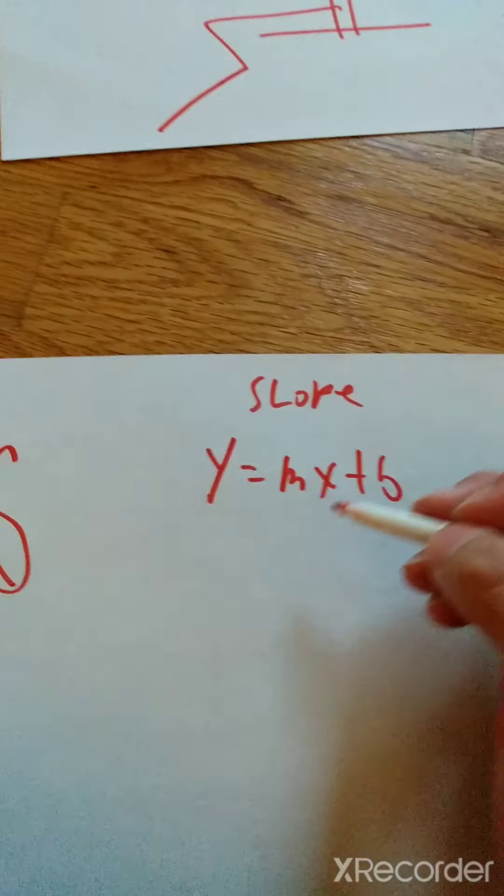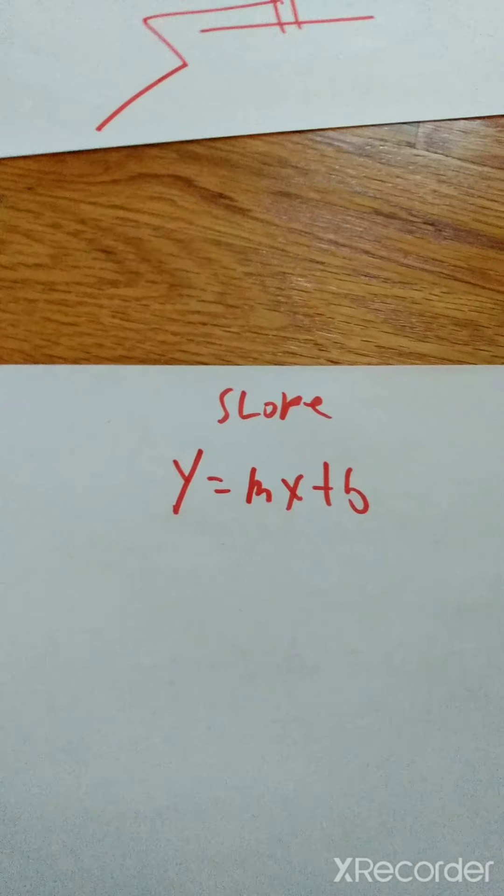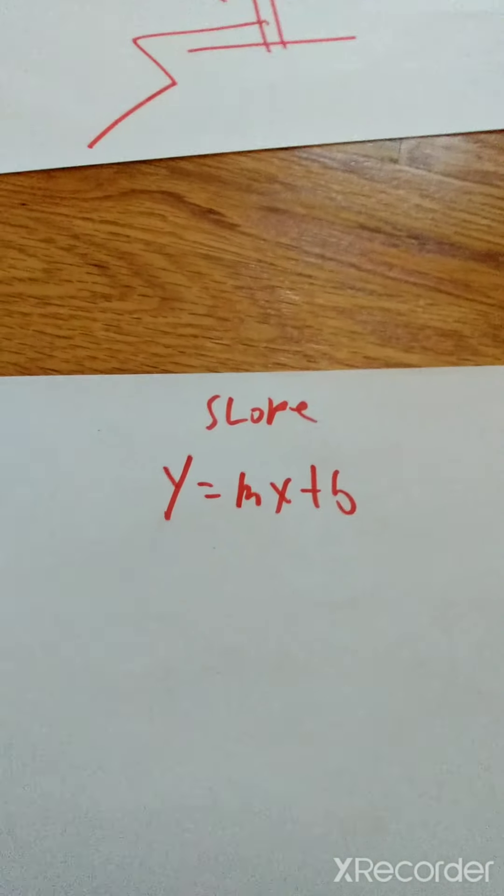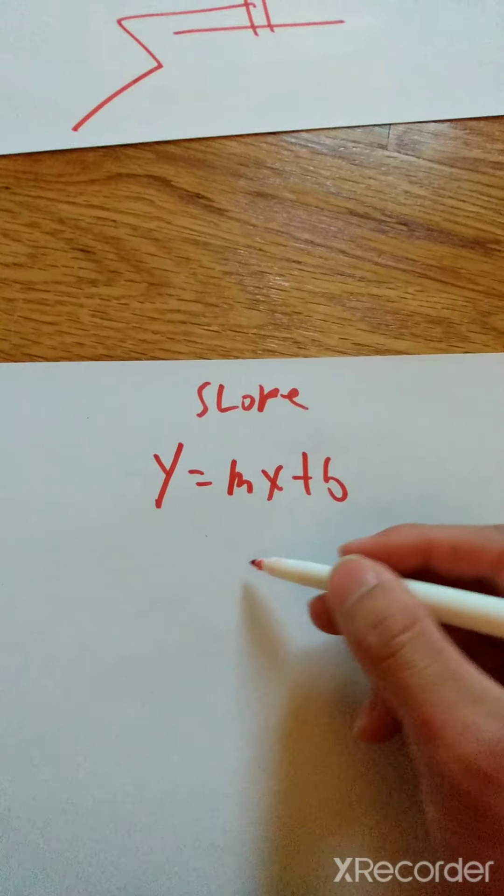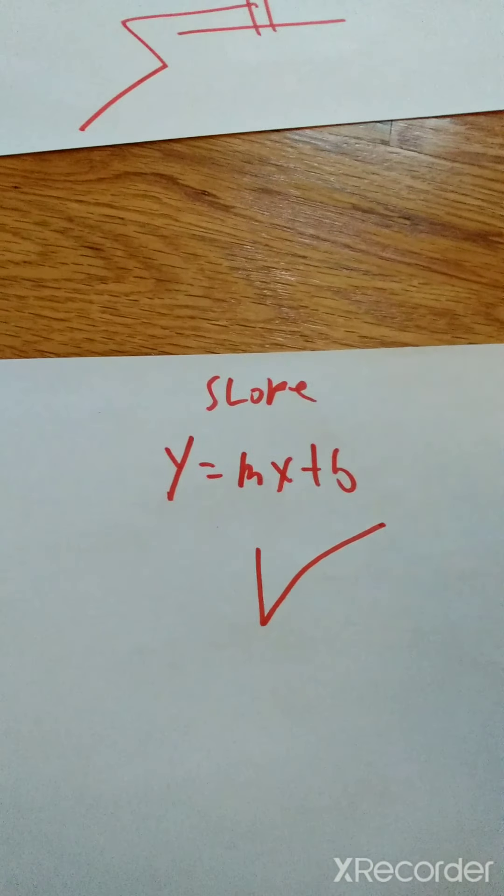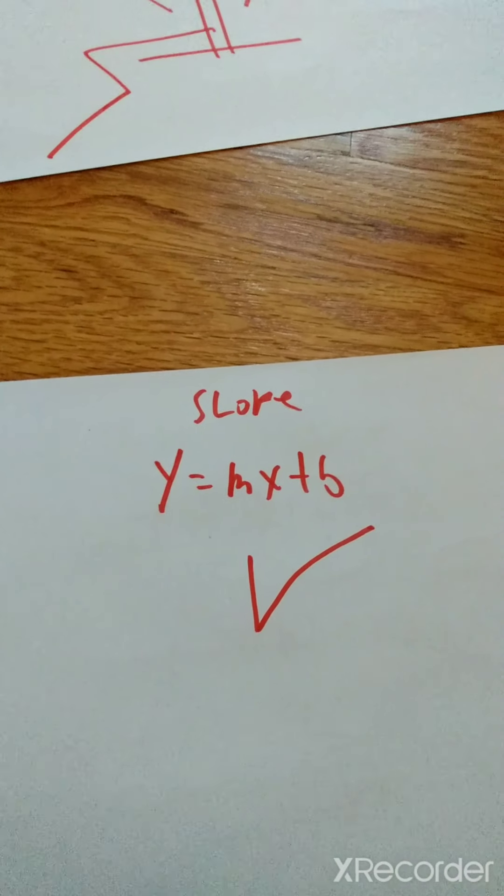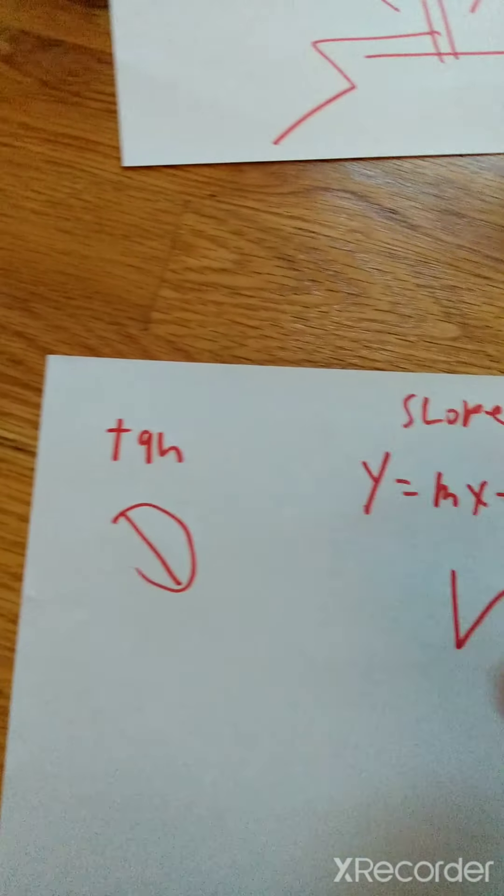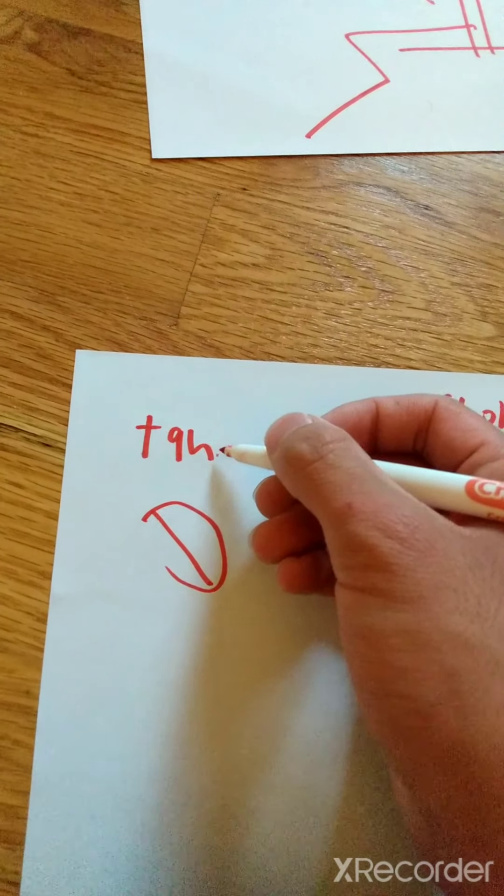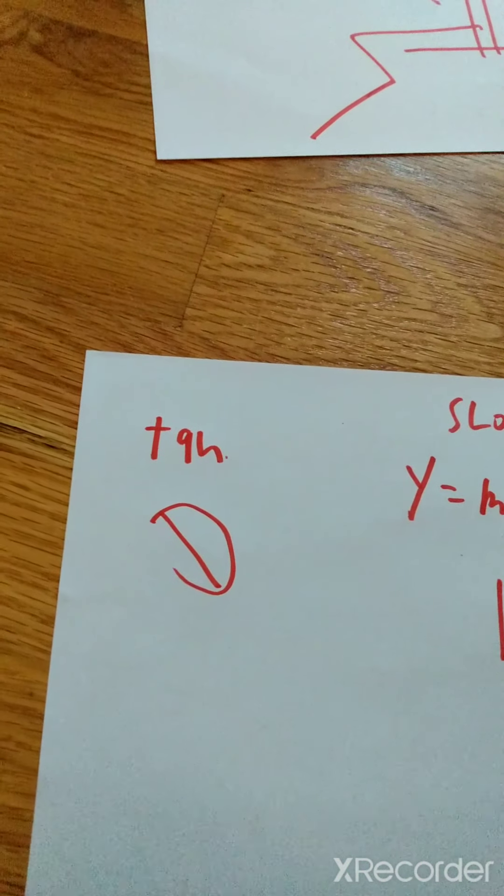When you are doing y equals mx plus b, usually your math teacher will tell you to graph something or graph this slope or this line. So with y equals mx plus b, you need to graph to find the slope, and with the tangent, there's no graph required to use.